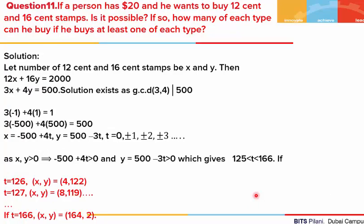If a person has $20 and wants to buy 12-cent and 16-cent stamps, is it possible? If so, how many of each can he buy if he buys at least one of each? Let him buy x and y number of these stamps. The equation becomes 12x + 16y = 2000. We reduce this equation and see that a solution exists as the GCD divides the right hand side. We write the linear combination, multiply by 500, and get the general solution. For x and y both to be positive, t must be in the range 125 to 166. Taking all values in this range gives the corresponding x and y values.